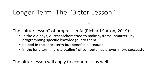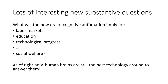There is this bitter lesson: these models are becoming better and better at research and economics. As Richard Sutton described it, in the long term, the brute scaling of AI systems has always proven more successful at any task, and that will apply to economic research as well. Now we have a few more years in which we humans are better at economic research. There are really important substantive questions: what will AI imply for labor markets, education, tech progress, and ultimately for social welfare? I want to end with an urgent call to think about what these models imply for our economy, as long as we humans are still the best technology around to answer these questions.